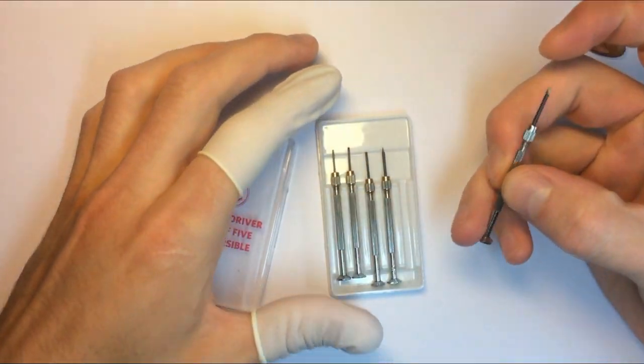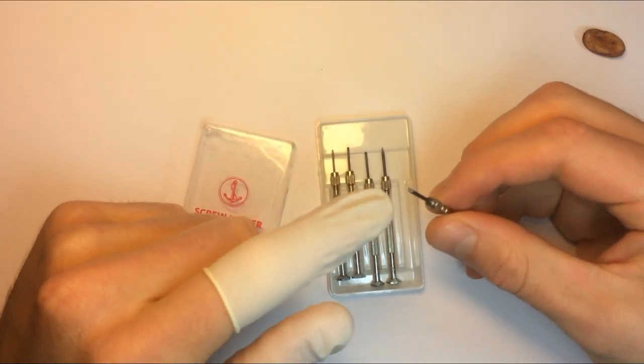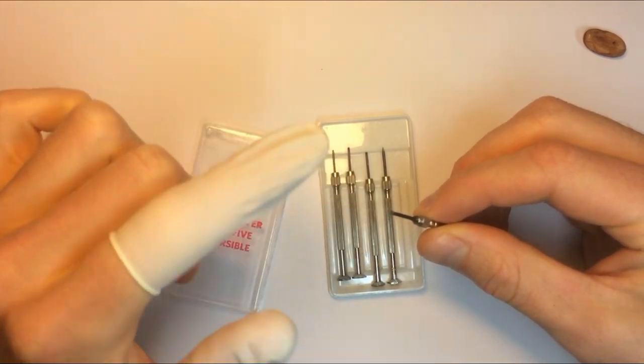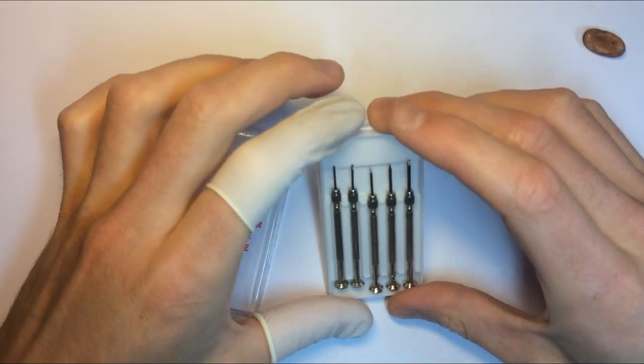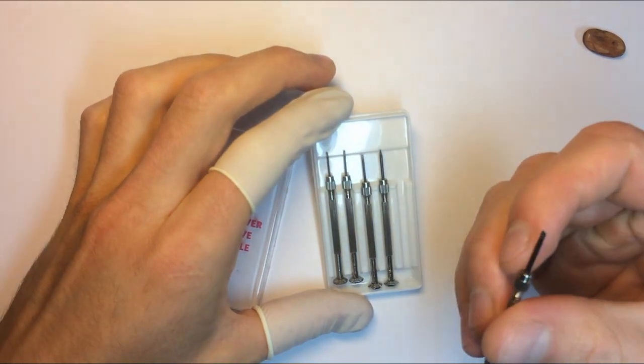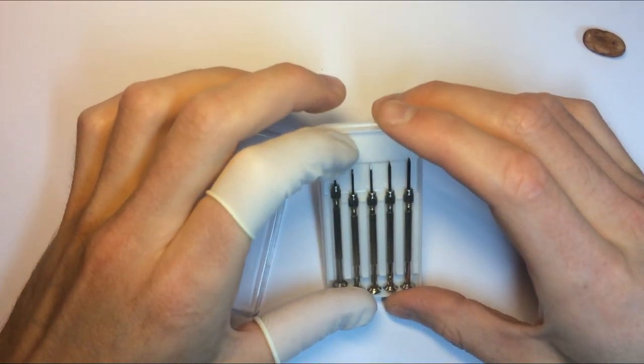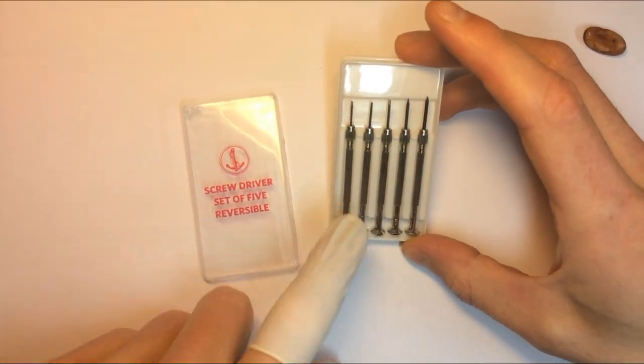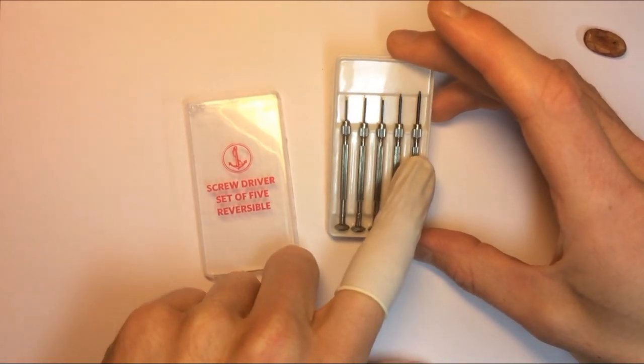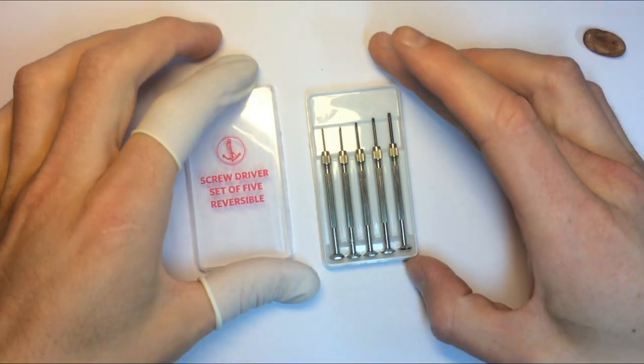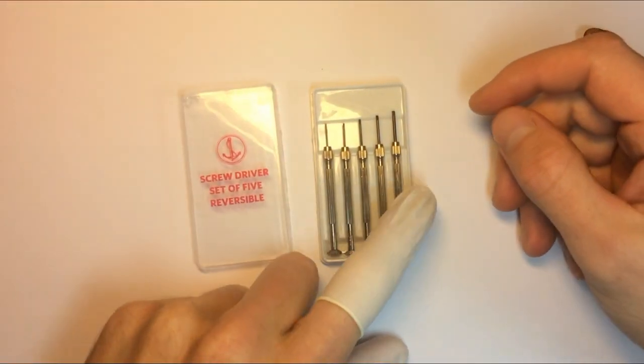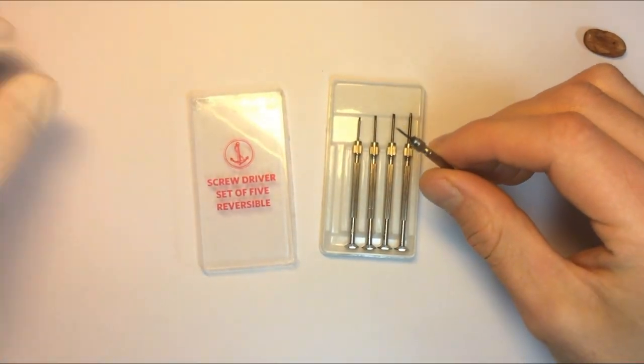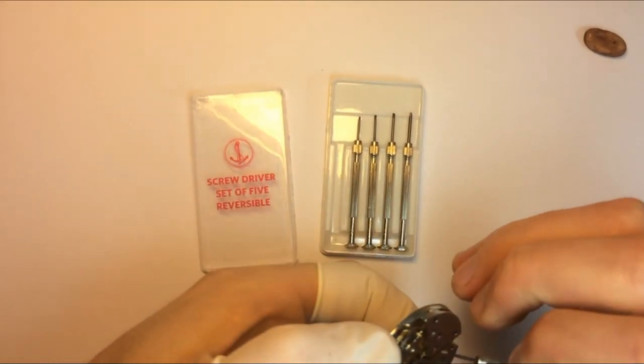This is also a cheap set of screwdrivers, cost me five dollars. The blade here is a little bit rough. It doesn't really scratch the screws as far as I've noticed, but you can still tell that it's a little bit gnarly to work with. This set is from 0.8 to 1.4 millimeters in diameter. I found myself using the 1.4 the most, but I did need the 0.8 for the tiniest screws near the escapement.